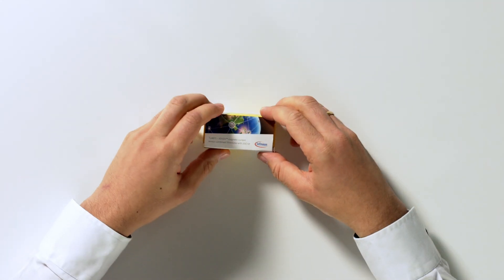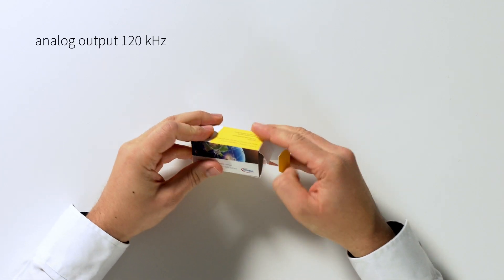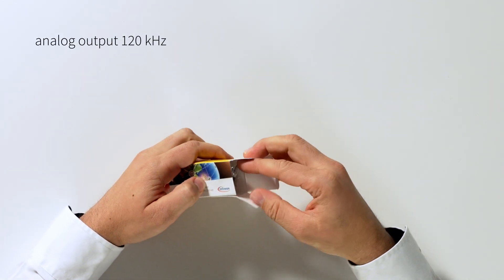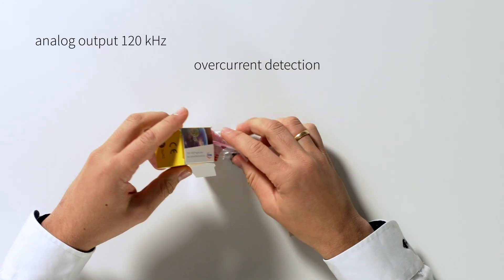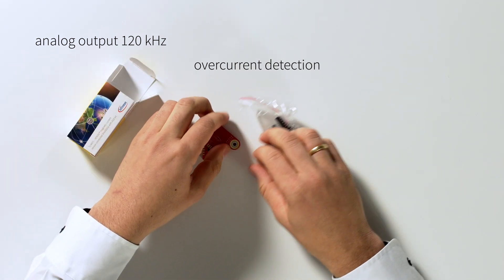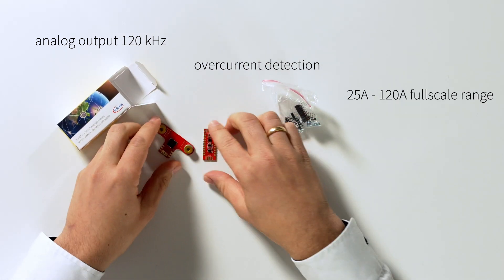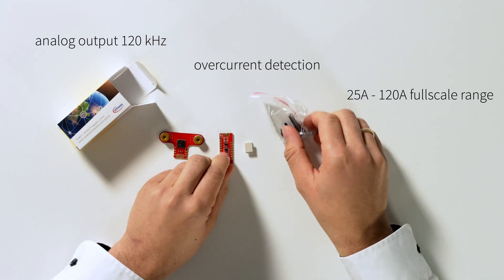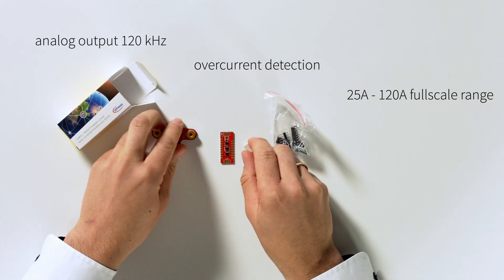This new current sensor offers some unique features: an analog output with a bandwidth of 120 kilohertz, an overcurrent detection with two overcurrent channels, and a current measurement range from 25A to 120A full-scale range.